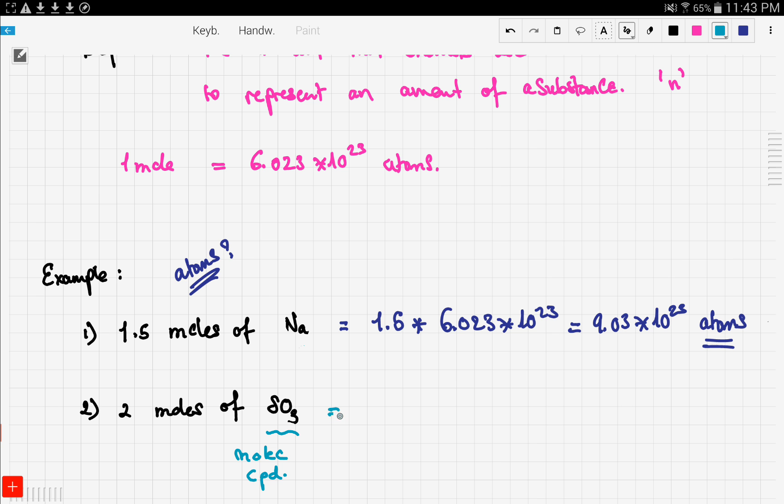If we multiply 2 moles times Avogadro's number, we get 1.204 times 10 to the power 24 molecules. Not atoms. Why is this? Because SO3 is a molecular compound. It's not an element.